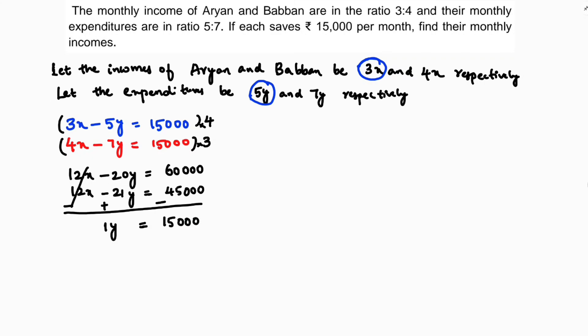Now if I substitute this 15,000 in any one of the equations I'll get the value of x. I'll take the first equation: 3x minus 5y equals 15,000.